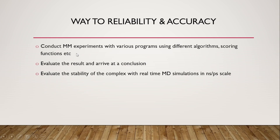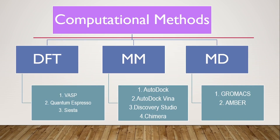To improve reliability and accuracy, conduct molecular mechanical experiments with various programs using different algorithms and scoring functions, then evaluate data from multiple experiments. Examples of computational programs include: DFT-based tools such as VASP, Quantum ESPRESSO, and SIESTA; molecular mechanics tools like AutoDock, Discovery Studio, and Chimera, primarily used for docking studies; and for molecular dynamics simulations, GROMACS and AMBER.